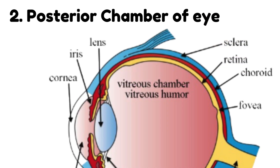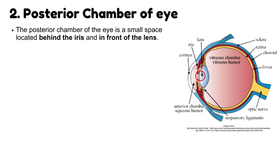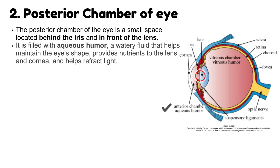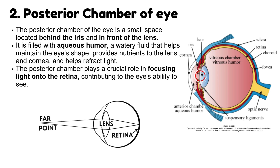Number 2: Posterior chamber of the eye. The posterior chamber is a small space located behind the iris and in front of the lens. It is filled with aqueous humor, a watery fluid that helps to maintain eye shape, provide nutrients to the lens and cornea, and help refract light. The posterior chamber plays a crucial role in focusing light onto the retina, thus contributing to the eye's ability to see.